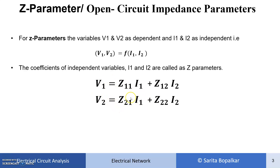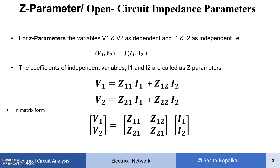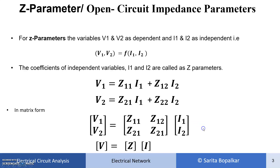We can express these two equations in matrix form as well. In matrix form, [V1, V2] equals the Z parameter matrix (containing the four Z parameters) multiplied by [I1, I2]. So V1 and V2 are the dependent variables whose values depend upon I1 and I2, while I1 and I2 are independent.